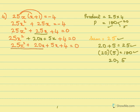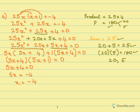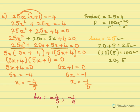From the first two terms, I take 5x common out: 5x(5x plus 4). From the next two terms, I take 1 common out: 1(5x plus 4) equals 0. So we get (5x plus 4)(5x plus 1) equals 0. So 5x plus 4 equals 0 gives x equals minus 4 by 5, and 5x plus 1 equals 0 gives x equals minus 1 by 5. The answers for this are minus 4 by 5 and minus 1 by 5.